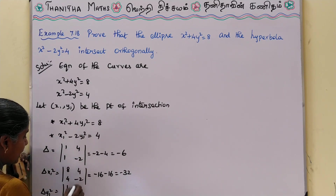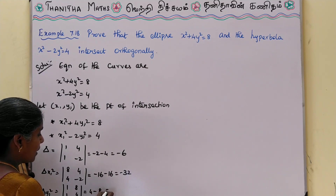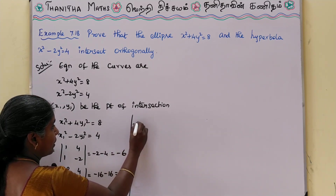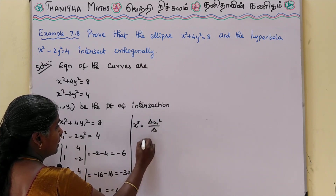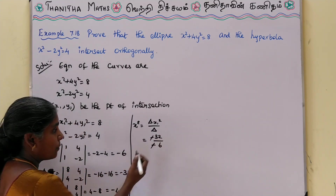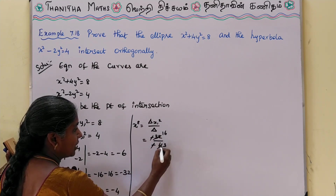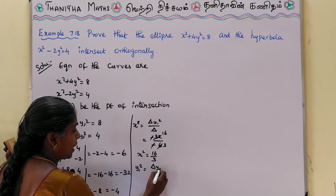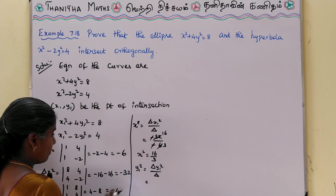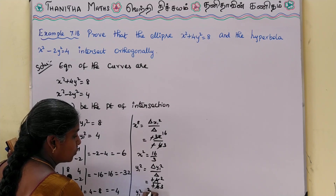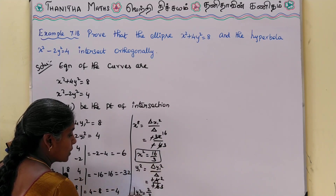So delta y1² gives us the other determinant. Then x1² = delta x1² / delta = -32 / -6. The negatives cancel and 32 and 2 simplify, giving x1² = 16/3. Similarly, y1² = delta y1² / delta = -4 / -6. After cancellation, y1² = 2/3. So x1² = 16/3 and y1² = 2/3.